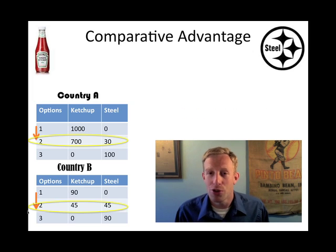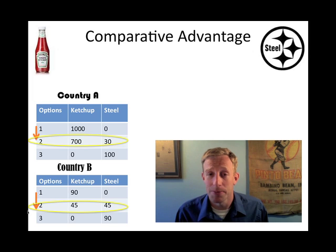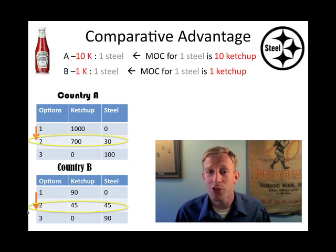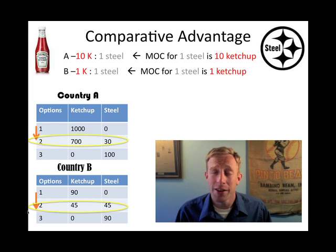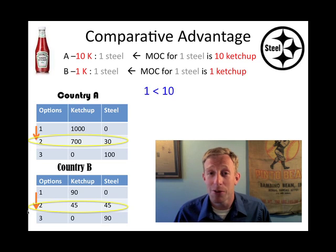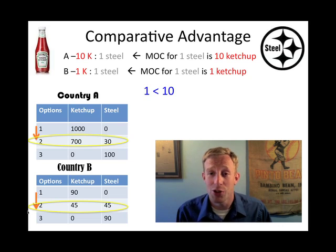Country A has a marginal opportunity cost of 10 ketchup to 1 steel. Country B has a marginal opportunity cost of 1 ketchup to 1 steel. So to produce steel, it costs Country A 10 ketchups and it costs Country B only 1 ketchup. It costs Country B less — because 1 is less than 10 — to produce steel. Therefore, Country B should be in the production of steel, because they don't have to give up as much as Country A would.